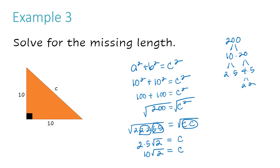The square root of C squared becomes just C, so the answer to the length C is 10 square root 2 — that is its most simplified form. Some people want to put this in a calculator and get a decimal, but you'll get a repeating decimal that isn't precise. There's no exact whole number that multiplies by itself to get 2 perfectly — you'll get something like 1.9999888. So 10 square root 2 is a better, more precise way to express the answer.